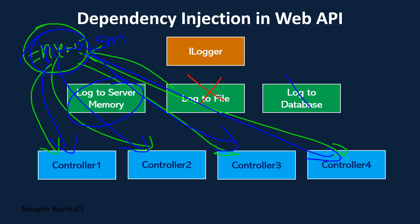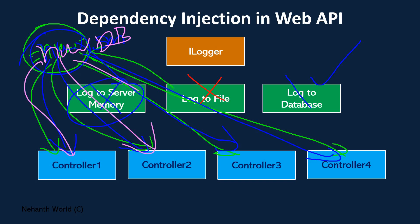Tomorrow, if you don't want to use the log-to-server mechanism and want to use the log-to-database mechanism instead, you simply modify one statement to new LogToDB, and the object will be injected dynamically — the problem is resolved. During maintenance, if you want to change the logging mechanism, you just need to modify one line of code. Those are the advantages of dependency injection. In .NET Core Web API using .NET version 7, Microsoft provides dependency injection by default as a built-in feature of the Web API framework.